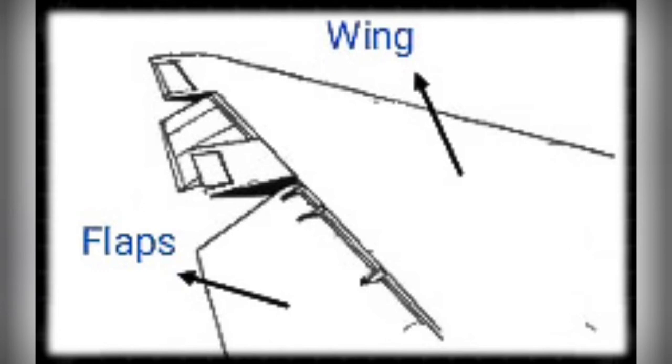During take off, flaps are operated moderately for high lift and low drag, and during landing they are deployed completely for generating high lift and high drag. Flaps help the aircraft to reduce the usage of runway during take off and landing.